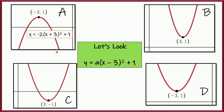Let's start with graph a. The equation for graph a is y equals negative 2 times x plus 3 squared plus 1. The leading coefficient a is negative 2. We don't have a clue from our equation what a is, but here a is negative and the graph opens downward. Look at d, c, and b — all of those open upward. If a is positive, the graph opens upward like b, c, and d. If a is negative, the graph opens downward like graph a.